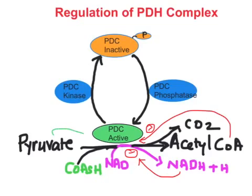On the positive side, whenever there is accumulation of pyruvate — the substrate — it will have a positive allosteric effect on pyruvate dehydrogenase enzyme complex. Similarly, if there is accumulation of CoA-SH (reduced coenzyme A), that will also have a positive allosteric effect on the complex, acting as a positive allosteric modulator.